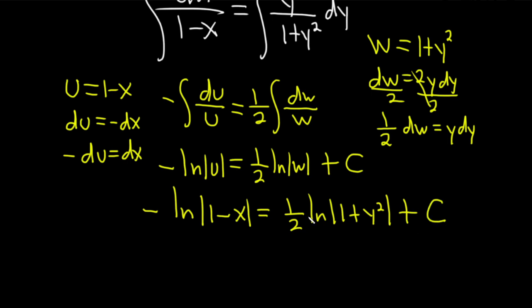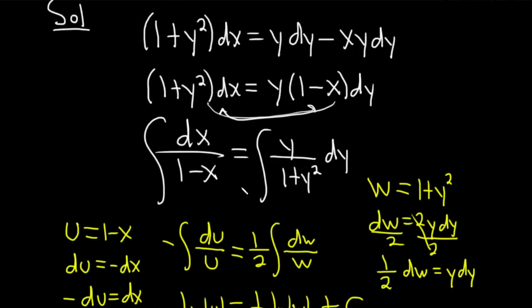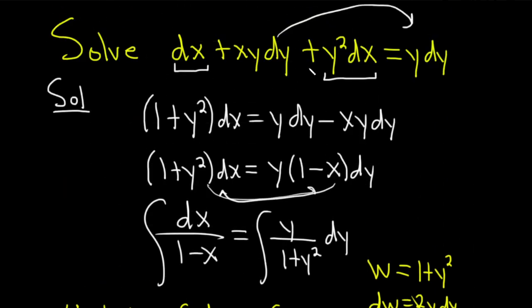You could keep going. You could solve this for y squared, but I'm just going to stop here. That's good enough. So yeah, just a separable differential equation that doesn't look separable when you first see it. But the trick is to group together the dx's, group together the dy's, and then say, hey, wait a minute, can I separate it?